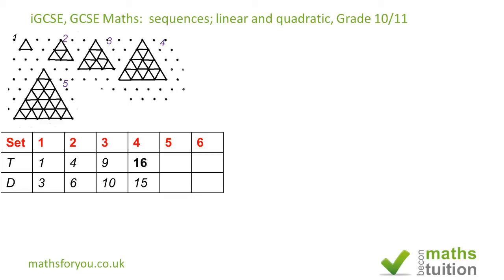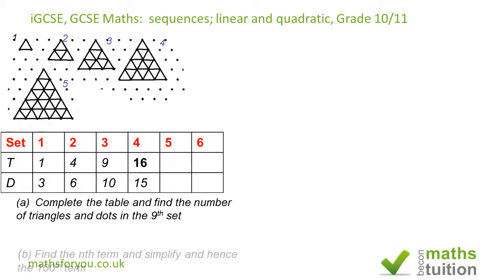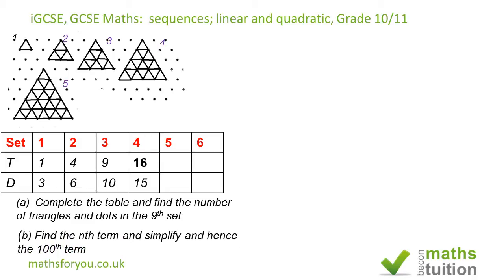Now given these triangles here, which I tried to draw myself, and also this table here, it says complete the table and find the number of triangles and dots in the ninth set, and it goes on to say find the nth term and simplify and hence find the hundredth term.